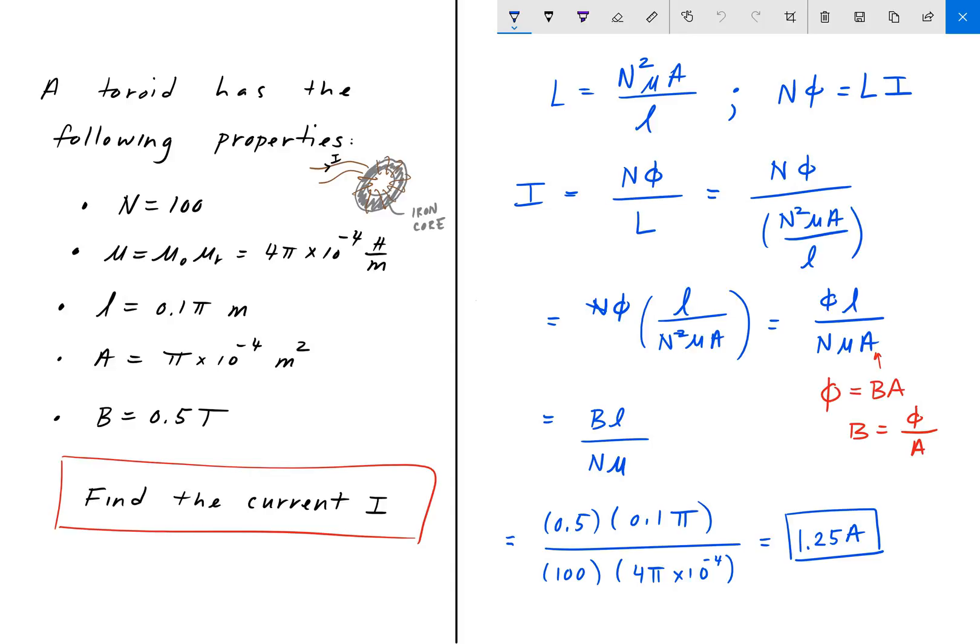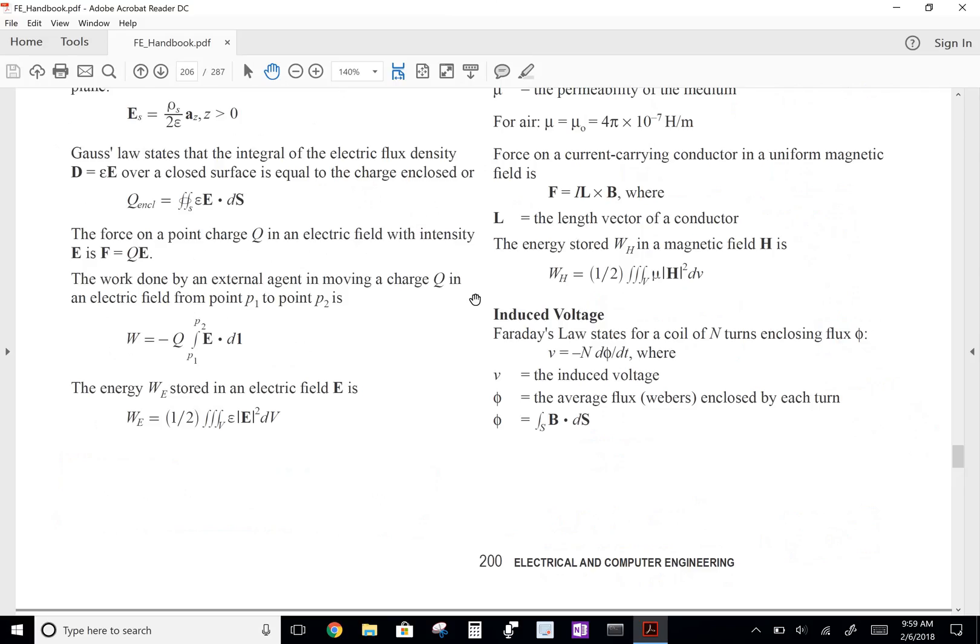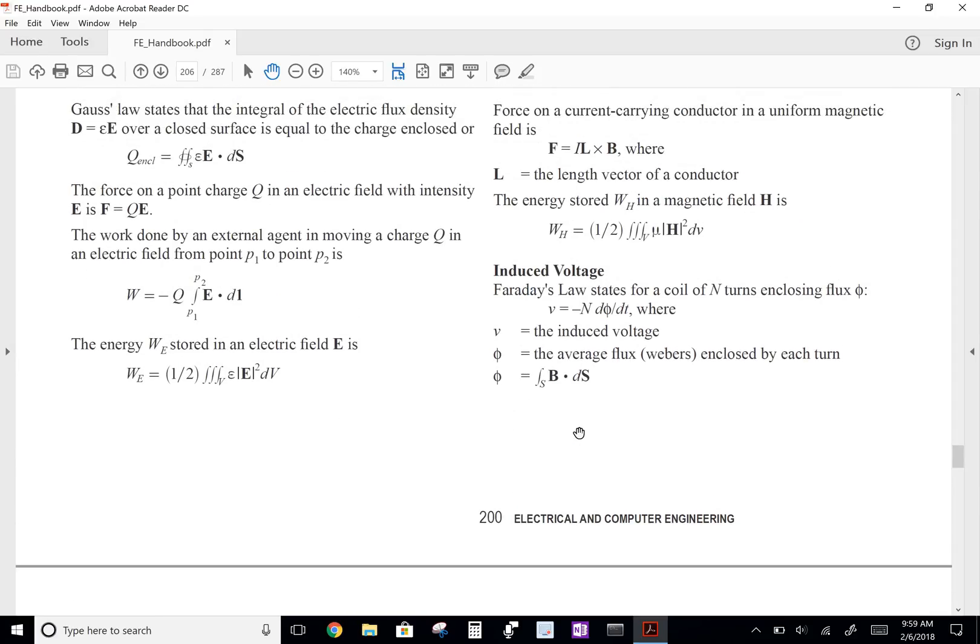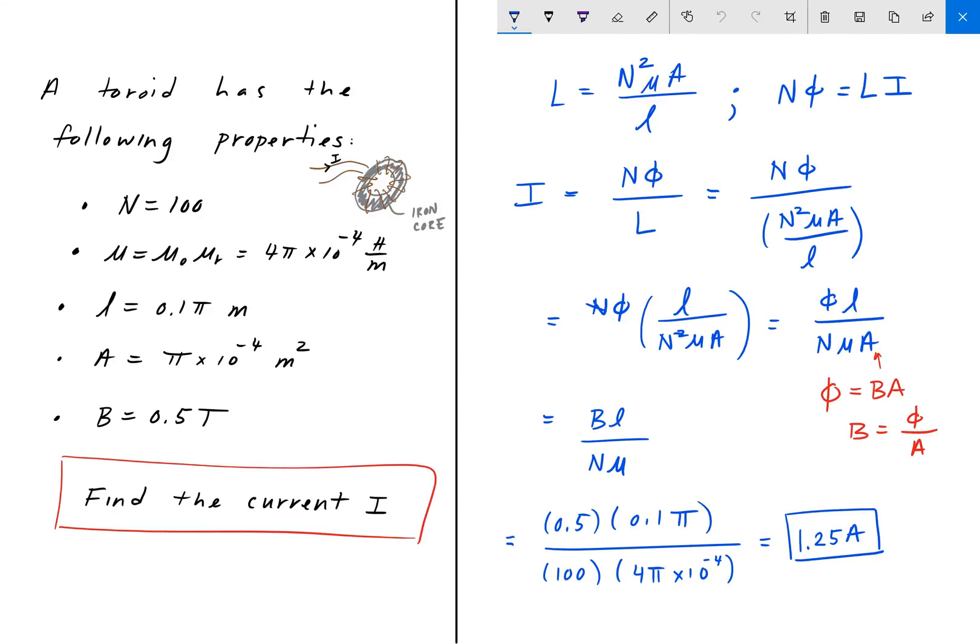One of the tricky things is knowing that the magnetic field equals the flux divided by area. But if you didn't know that, that formula is also in the handbook. If you go to page 200, you have the induced voltage here. On the bottom we have that the flux equals the surface integral of the magnetic field times ds, the surface area. From there you can derive that φ = B × A. So that's one way of solving it. I actually didn't solve it that way. I solved it this way for you guys because those are the formulas that are given in the FE handbook.